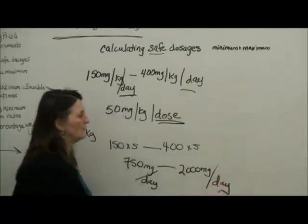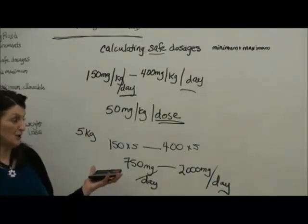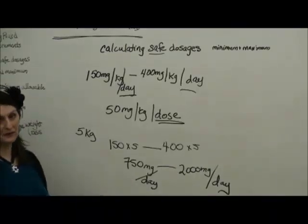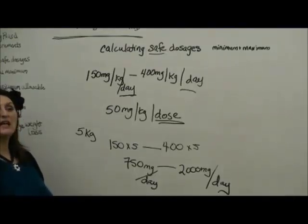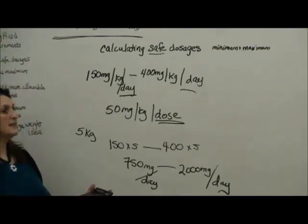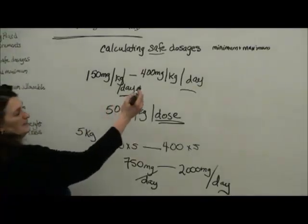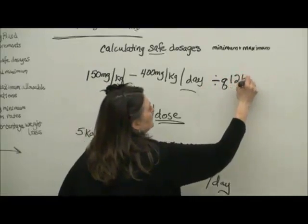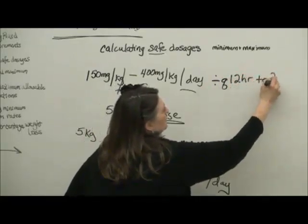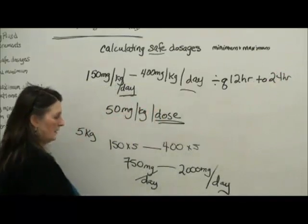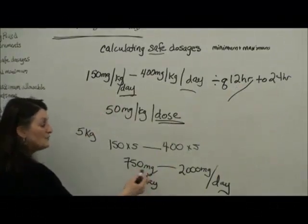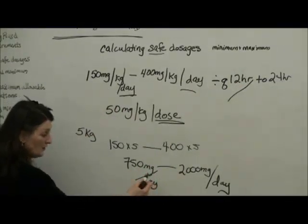Now you need to look at your reference and look at how it's ordered on your patient, because children with compromised metabolisms because of liver failure or renal failure may actually have less frequent dosing because they are not clearing the drug quickly enough. If it says that it can be given divided q12 hours to 24 hours, if our patient is getting it every 12 hours, then we are going to divide this total daily dose by two.